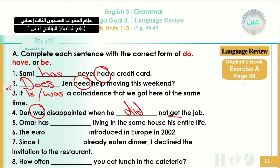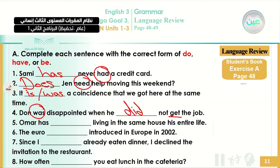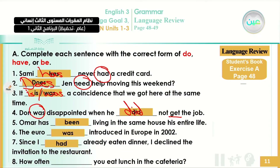We'll leave sentences five through eight for you to do as practice on page 48, exercise A. Here we're going to give you the model answer for this exercise. You can pause the video, think about it, and then play it again to check the model answer. So this is the model answer — we did the first four already, and here are numbers five, six, and seven. You can do them by yourself.